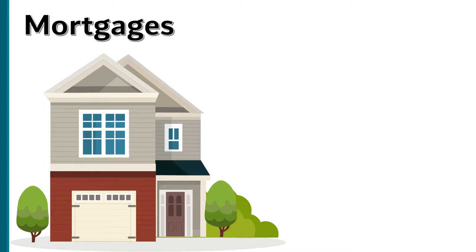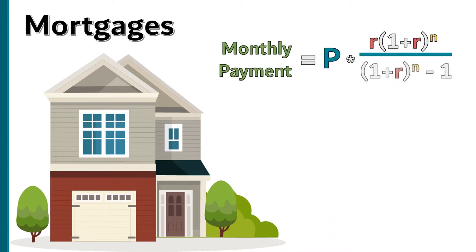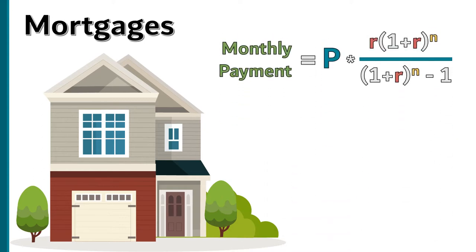There's a handy formula for calculating what your monthly mortgage payment will be, based on the principal amount borrowed, the interest rate, and the term of the loan. In this equation, P is the principal, R is the monthly interest rate paid, and N is the number of months the loan will be paid back over.